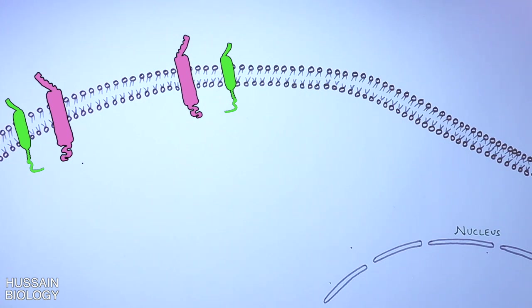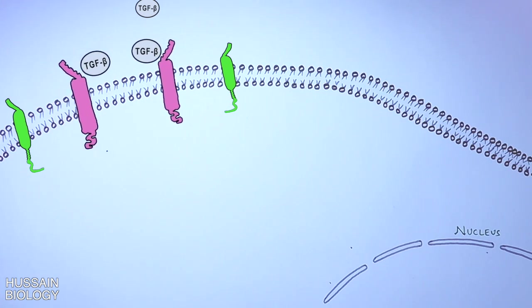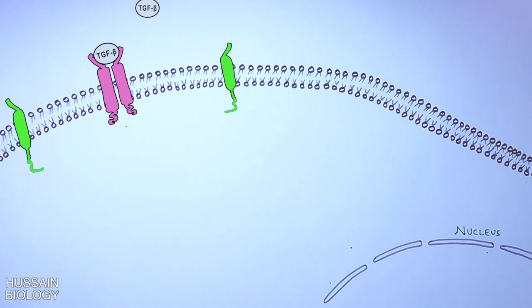Here we see the TGF-beta signaling molecule. This TGF-beta molecule binds with the Type 2 receptor monomers, and this will induce the dimerization of Type 2 monomers as shown in the animation. In the next step, the dimerization will recruit the Type 1 receptor monomers in close proximity with Type 2 receptors, with which the Type 2 receptor shows kinase activity, thereby phosphorylating the Type 1 monomers at serine residues.